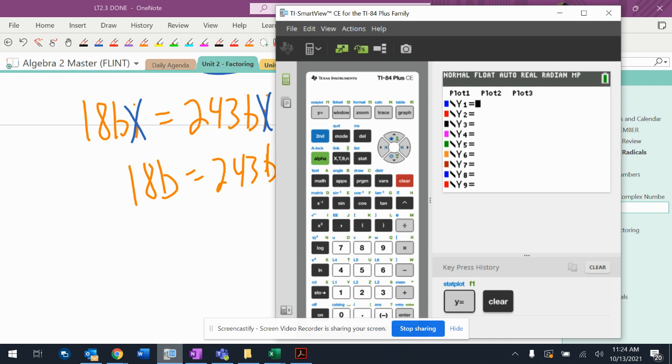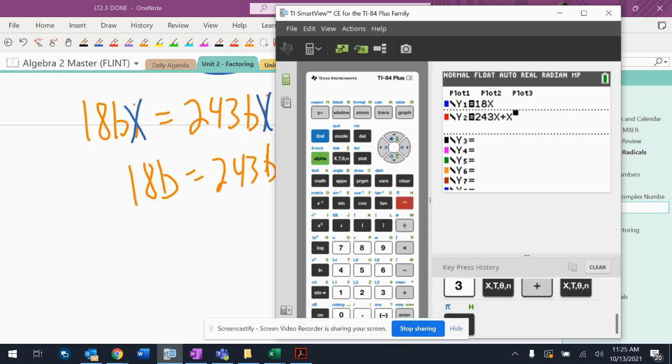So I'm going to put 18x into the first one and I'm going to put 243x plus x to the third, not negative x to the third.